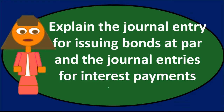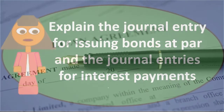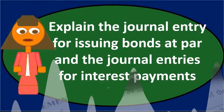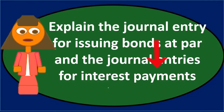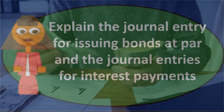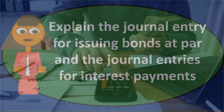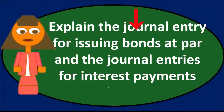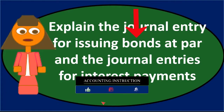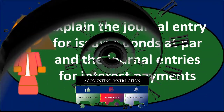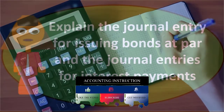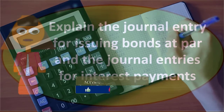A typical bond makes periodic payments, possibly semi-annual, according to the terms of the agreement. These interest payment journal entries are very straightforward because there are no premiums or discounts to deal with. We simply calculate the stated rate times the face amount of the bond, divide by two for semi-annual payments, and then debit interest expense and credit cash for that amount.